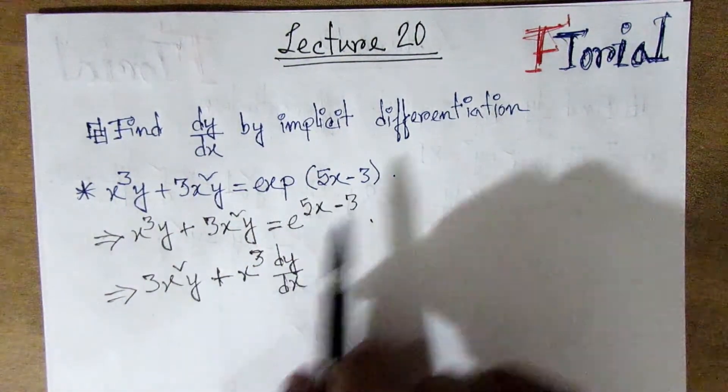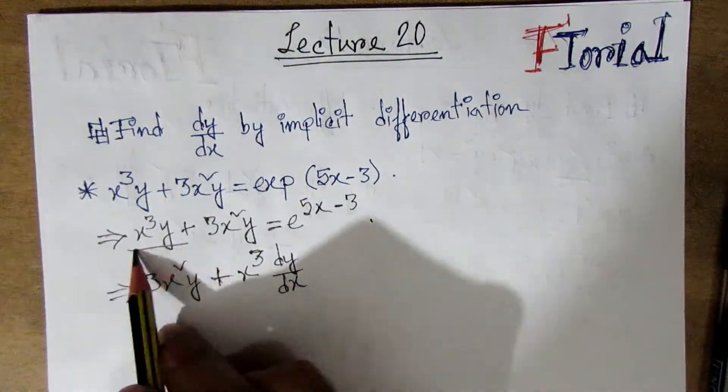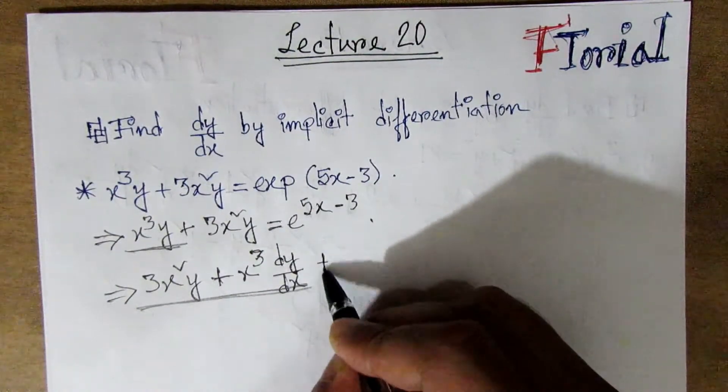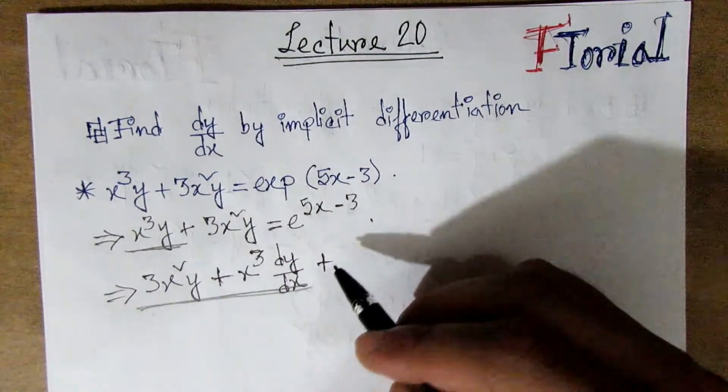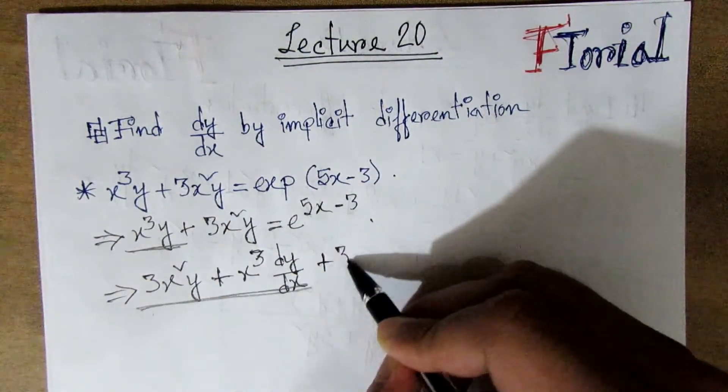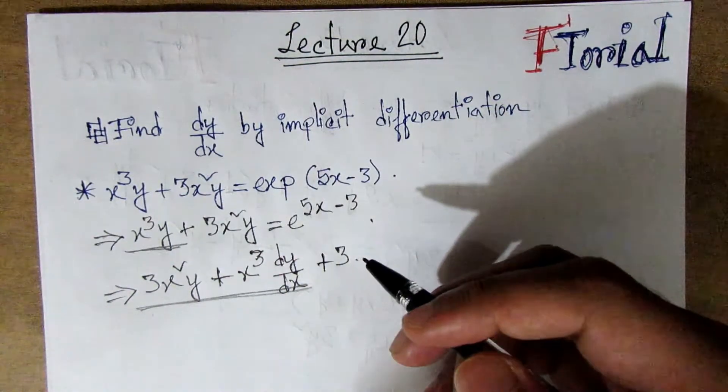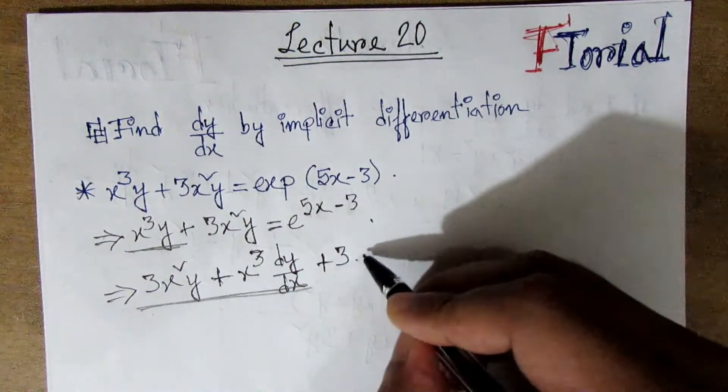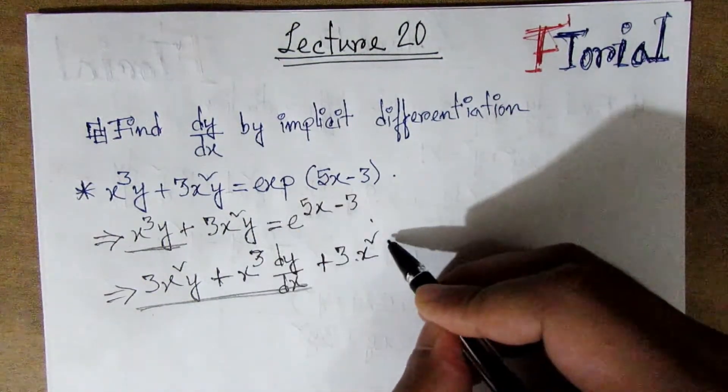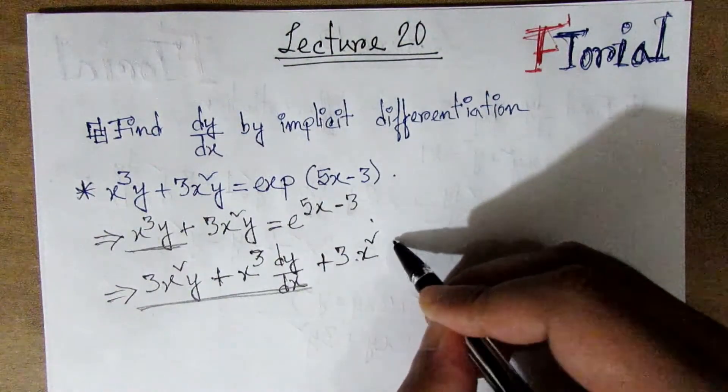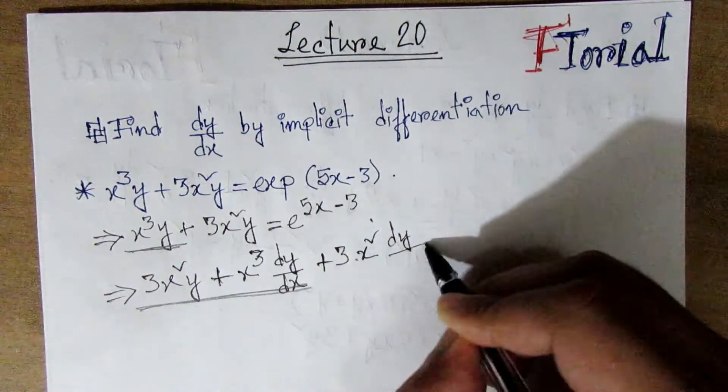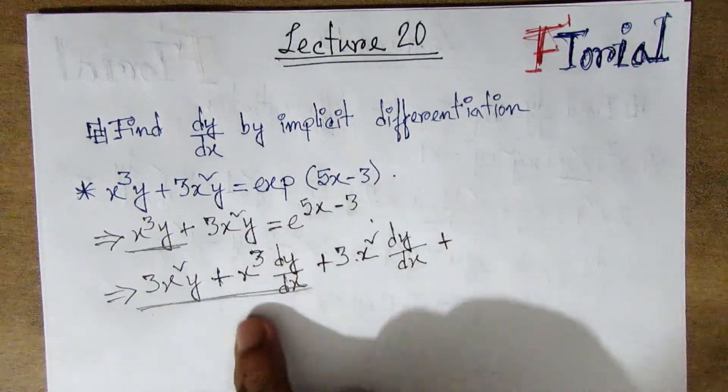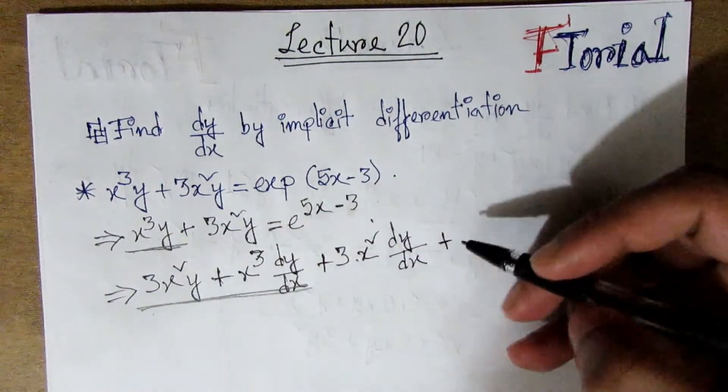Using the product rule on x³y³, we get 3x² times y³ plus x³ times 3y² times dy/dx. Then for the other term, we apply the product rule to x²y.